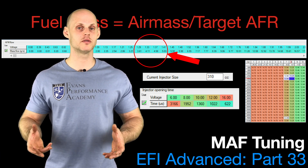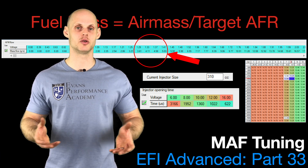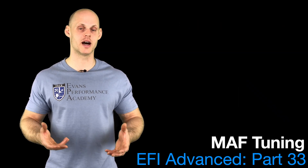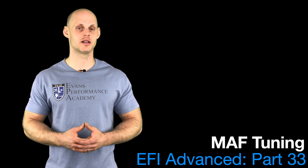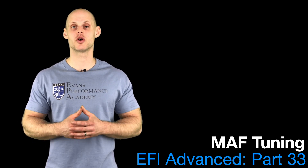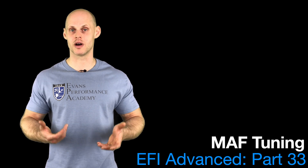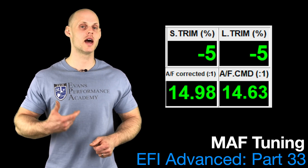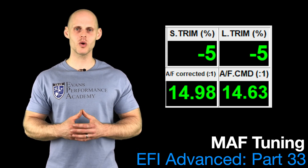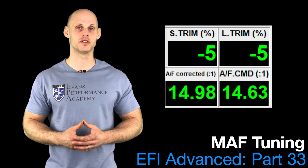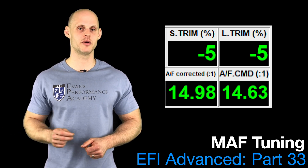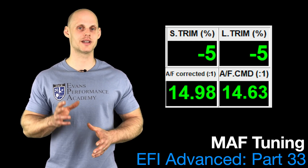In a perfect world, this would operate open loop — no interference, simply hitting the requested air fuel at all times. But it's not a perfect world; there are always variables to account for. That's where closed loop operation comes in. The O2 sensor uses short and long term fuel trim to get the fuel mixture back in line. That applies here with a mass airflow sensor car as well, and we're going to look at using that for our tuning technique later in the video.